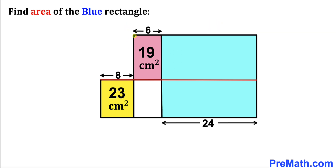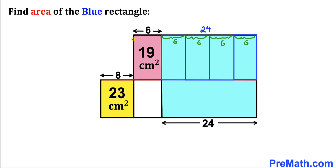We know this horizontal length is 6 centimeters. So we can divide this blue rectangle into four equal parts, each with a horizontal length of 6 centimeters. Since this height is the same as the pink rectangle's height, the area of each individual rectangle equals 19 cm² — so each of the four parts is 19 cm².